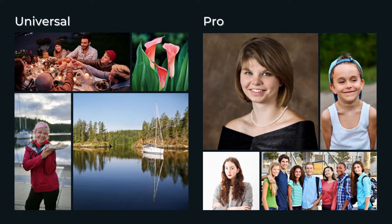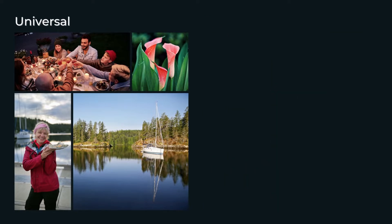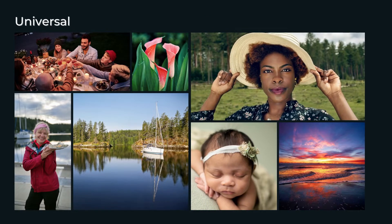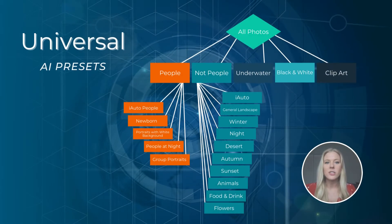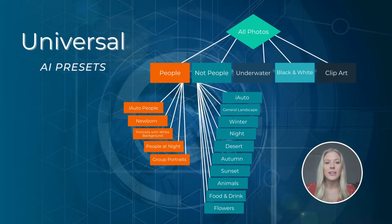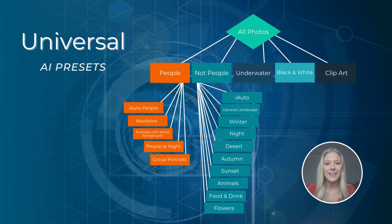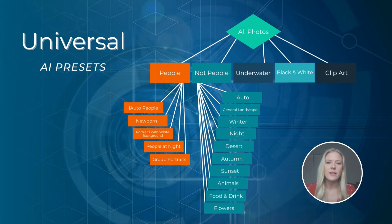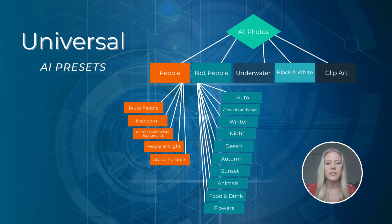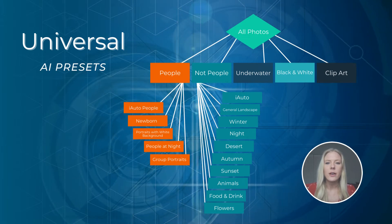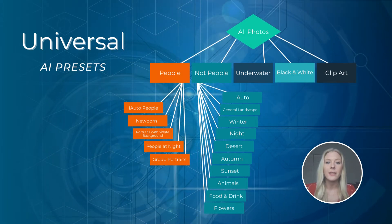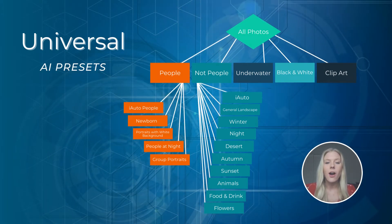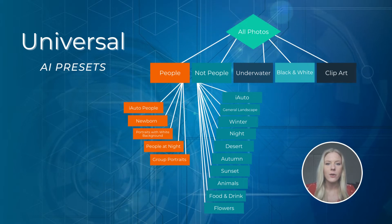We have two different groups of scenes and we call these universal and pro. Our universal group contains a wide range of scenes and can be used for all types of photos. The decision tree on screen shows how these scenes are divided. There are five main categories which you can see across the top, and the first two categories — photos with people and photos without people — are divided into several subcategories.